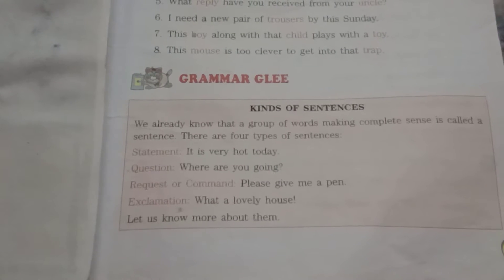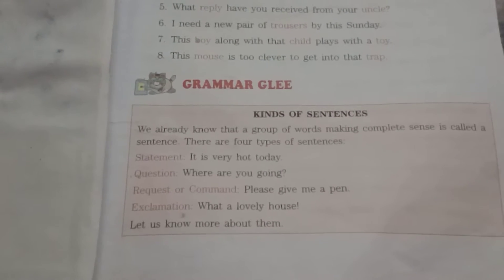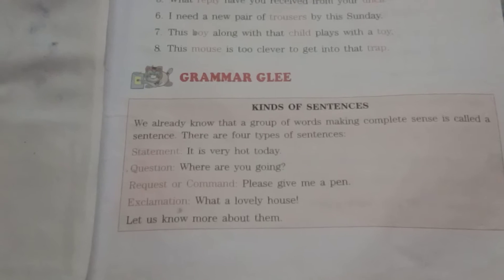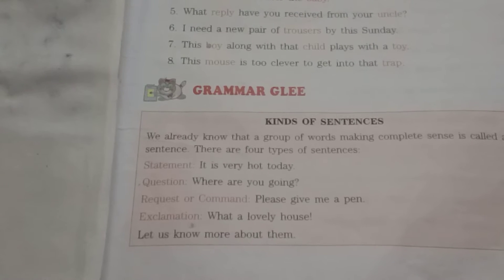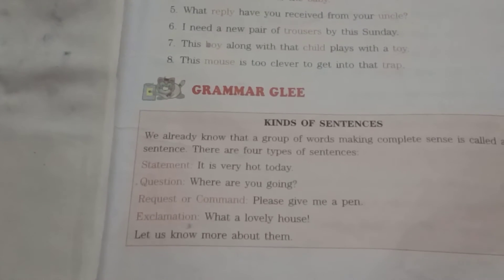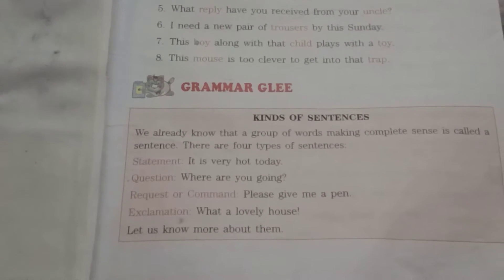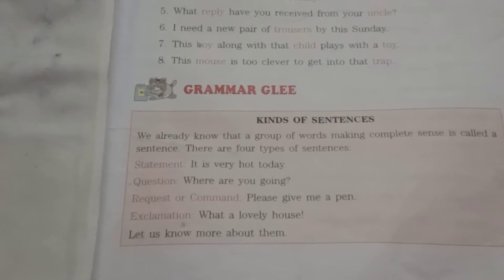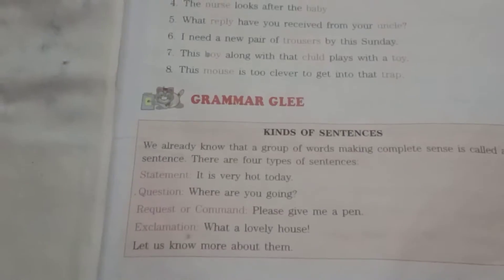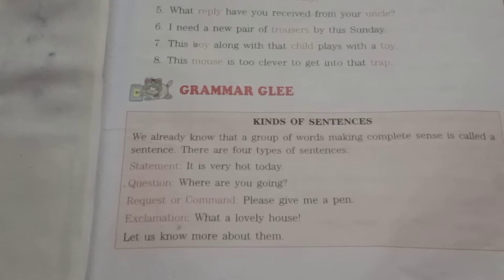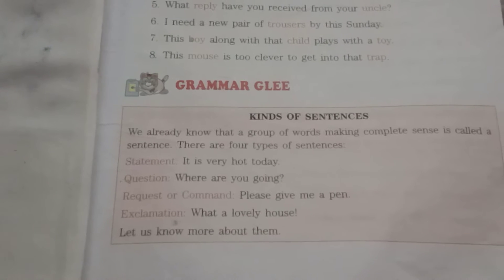The four types of sentences are: statements, questions, requests or commands, and exclamations. For example, 'It is very hot today' is a statement. 'Where are you going?' is a question. 'Please give me a pen' is a request or command. 'What a lovely house! What a lovely flower!' is an exclamation.